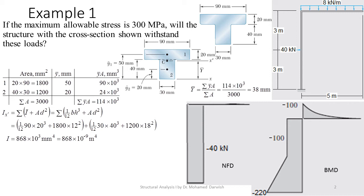Plus 1 over 12 times 30 times 40³, this is the I₂, plus area 2, which is 1200 times 18², which is the distance between centroid 2 and the 38, which is 38 minus 20, so this is 18². This will give us an I of 868 times 10³ millimeters to the power 4.